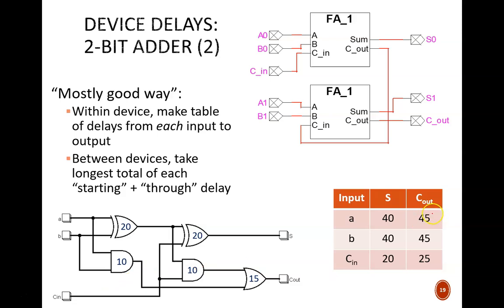This table is now our legend as we focus on the device level schematic. How long does it take for a signal to pass from these inputs to output S? It is the largest number in the S column or 40 nanoseconds. How long does it take for a signal to pass from these inputs to C out? It is the largest number in the C out column or 45 nanoseconds.